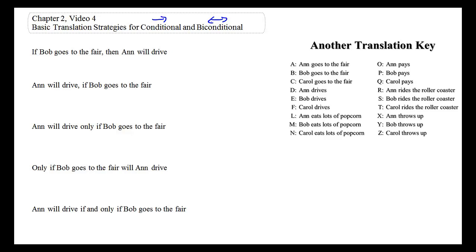Take our first sentence: a straightforward, simple conditional. If Bob goes to the fair, then Ann will drive. We can symbolize this with B for 'Bob goes to the fair' in front of the arrow, and D for 'Ann will drive' after the arrow. Conditionals have two distinct parts: the antecedent (the if-part) and the consequent (the then-part). The antecedent comes before the arrow; the consequent comes after.